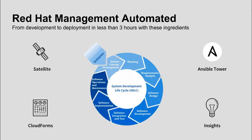Ansible Tower helps you scale IT automation, manage complex deployments, and speed productivity. It allows you to centralize and control your IT infrastructure with a visual dashboard, role-based access controls, ACLs, job scheduling, integrated notifications, and graphical inventory management. Ansible Tower's REST API and CLI make it easy to embed Tower into existing tools and processes — you don't have to throw away what you're currently using; you can hook Ansible Tower into existing endpoints. And if you're using CloudForms, you can do that even more tightly.